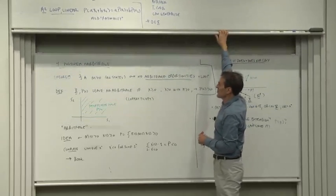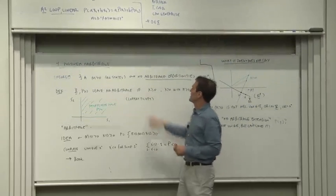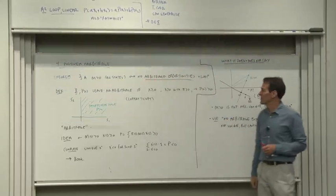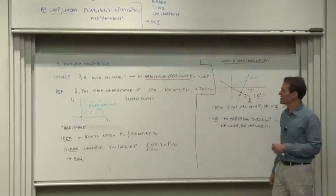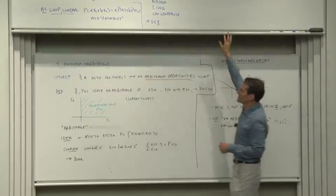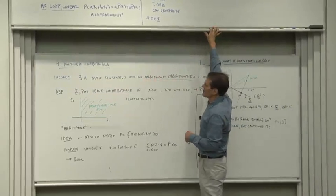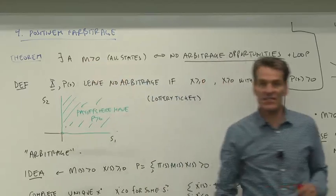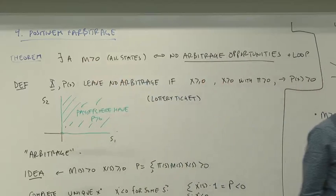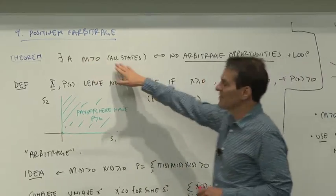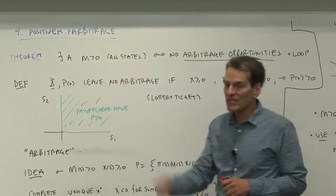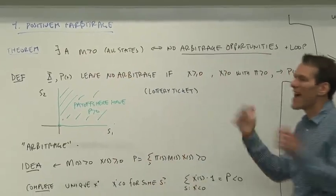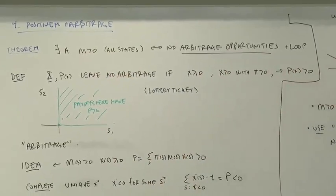Here's the theorem. If there are no arbitrage opportunities, as well as the law of one price, then there is a strictly positive discount factor. And strictly positive means in all states of nature. No matter what happens, this thing comes out positive.